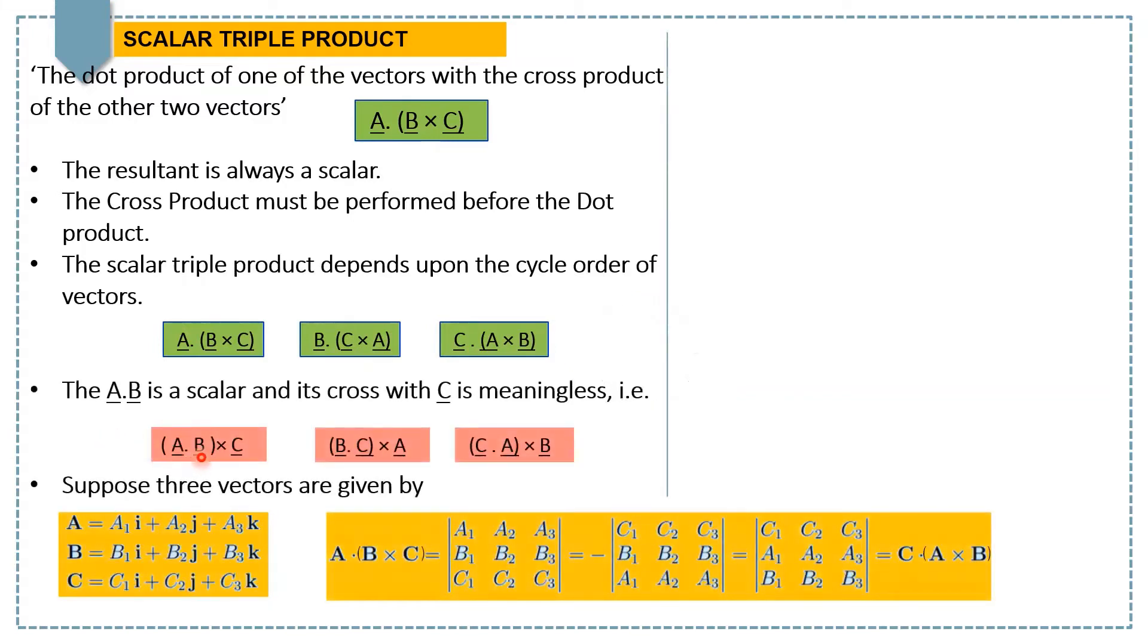Here, A dot B is a scalar and its cross with C is meaningless. It means that we can't perform a cross product between a scalar and vector.